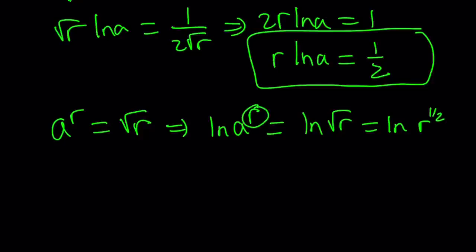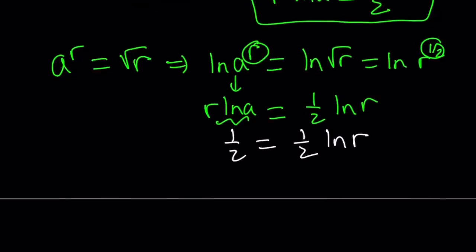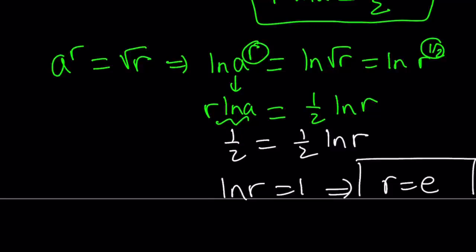Now, by using the power rules, we can go ahead and move these powers to the front. And this gives us r ln a equals 1 half ln r. And we know that r ln a is 1 half. So we can replace this with 1 half. And that's going to give us 1 half equals 1 half ln r. And then from here, we're going to get ln r equals 1, which implies r equals e, Euler's number.